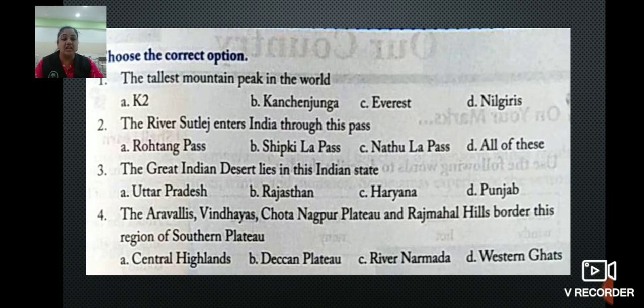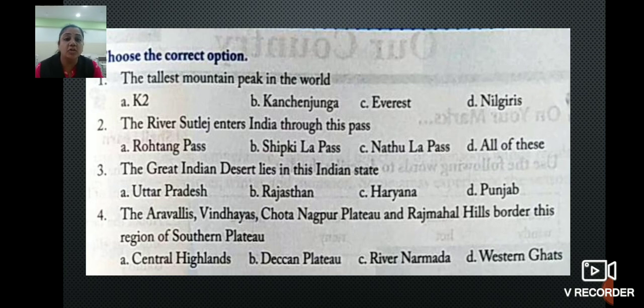Now the next question is choose the correct option. The first one: what is the tallest mountain peak in the world? The options are K2, Kanchenjunga, Everest, and Nilgiris.